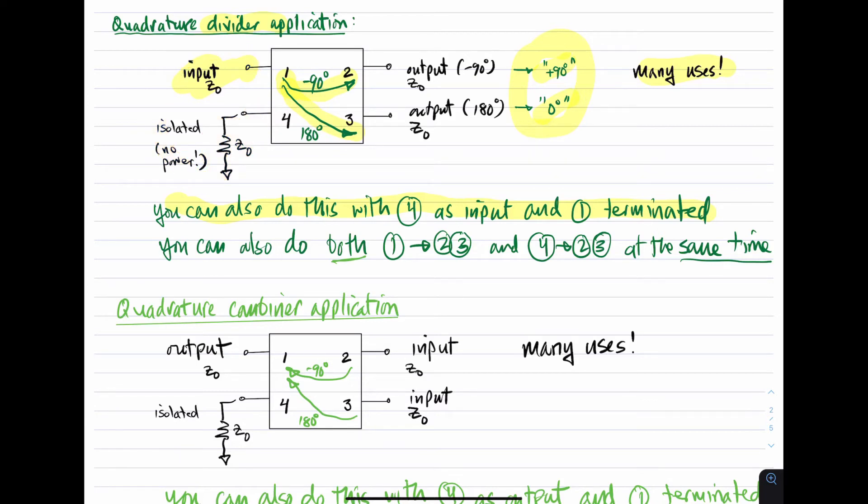Furthermore, you can do both things at the same time. In other words, you can apply a signal to port one and have it appear at ports two and three with a 90-degree phase shift. And at the same time, you can apply a signal to port four and have it appear at ports two and three with a 90-degree phase shift. You can do both of these things at the same time. And there are various applications for exactly that. Now in that case, neither ports one nor four require this matching resistor. You simply apply the signals directly to the ports.